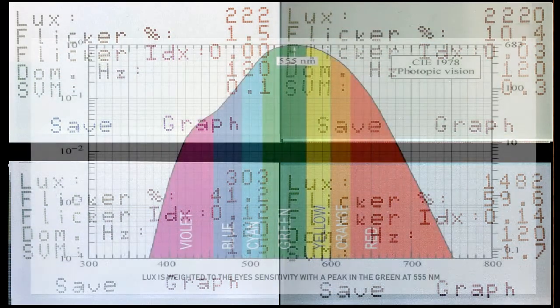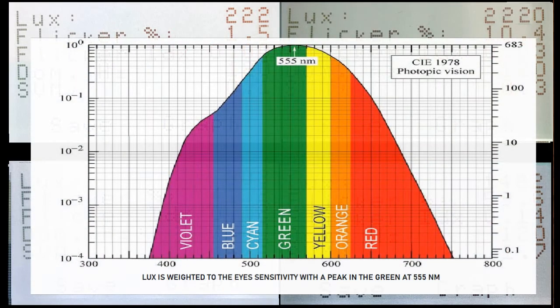Lux is a measurement of how much usable visible light is provided to an area to perform tasks such as viewing objects, reading, or walking.